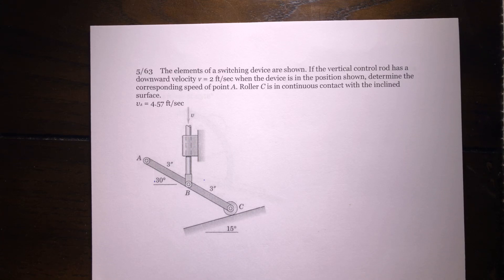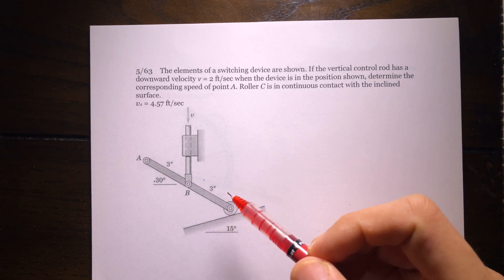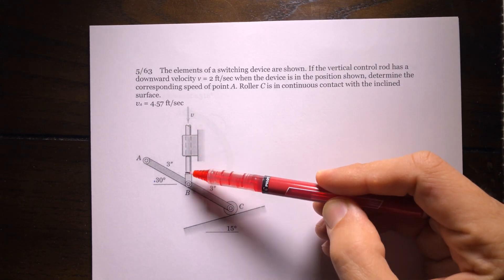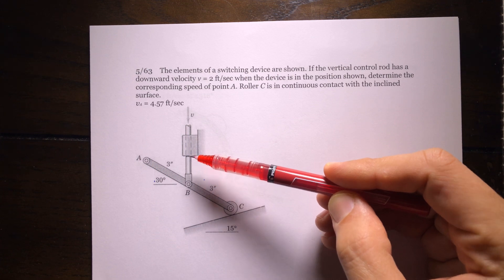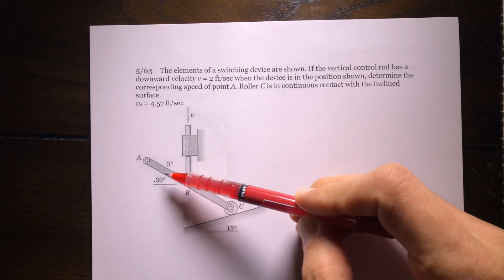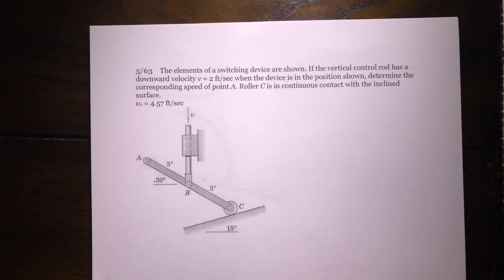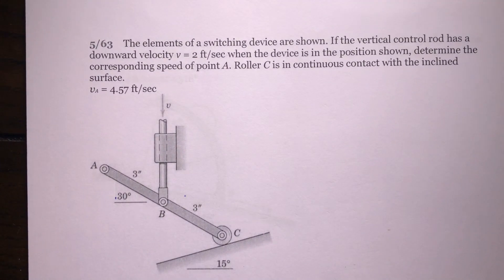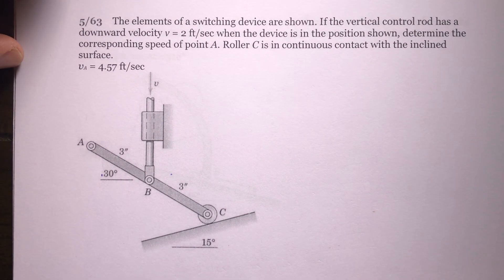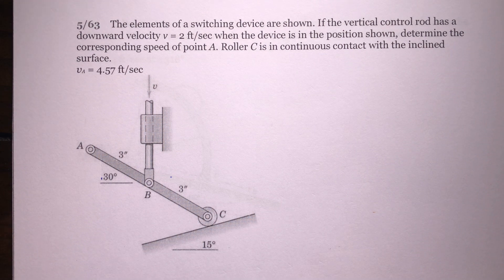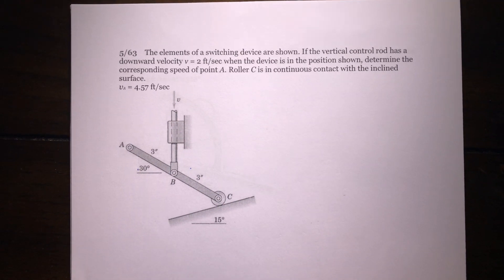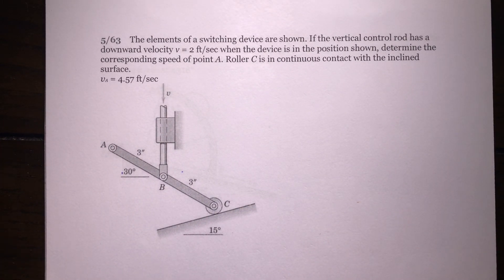Another example for this section: problem 63, chapter 5. We have a mechanism where this bar is moving down on a slider with a velocity V of 2 feet per second. There's another bar pinned to the first one at point B, and at the end of that bar is a roller in contact with an incline, so it moves upward along the incline. The question is: what is the velocity of point A? This is more challenging than the previous one, so try your best to solve it — pause the video and come back in 15 minutes.